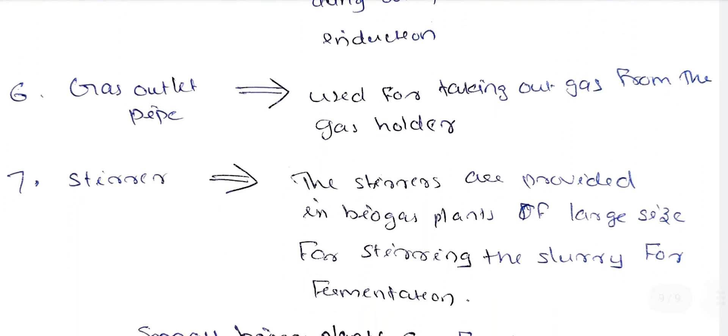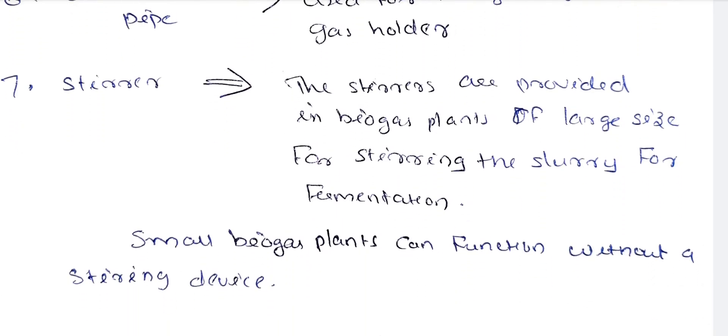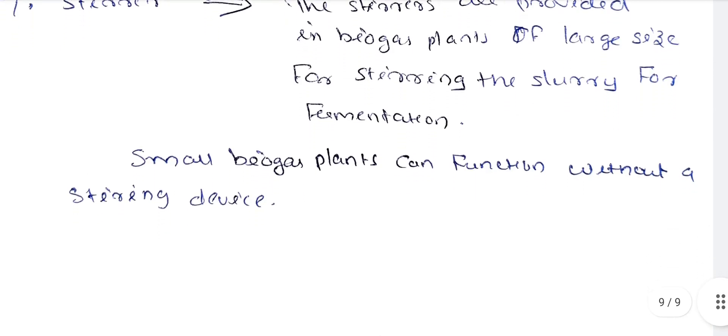Next, gas outlet pipe — it is used to take out the gas. The stirrer is provided in large-size biogas plants for stirring of slurry for fermentation. Small biogas plants can function without a stirring device.